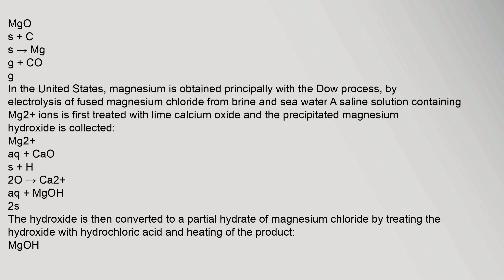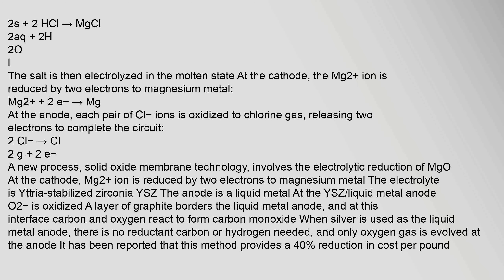In the United States, magnesium is obtained principally with the Dow process, by electrolysis of fused magnesium chloride from brine and seawater. A saline solution containing Mg²⁺ ions is first treated with lime (calcium oxide) and the precipitated magnesium hydroxide is collected. The hydroxide is then converted to a partial hydrate of magnesium chloride by treating with hydrochloric acid and heating. The salt is then electrolyzed in the molten state: at the cathode, Mg²⁺ is reduced by two electrons to magnesium metal; at the anode, each pair of Cl⁻ ions is oxidized to chlorine gas, releasing two electrons to complete the circuit.